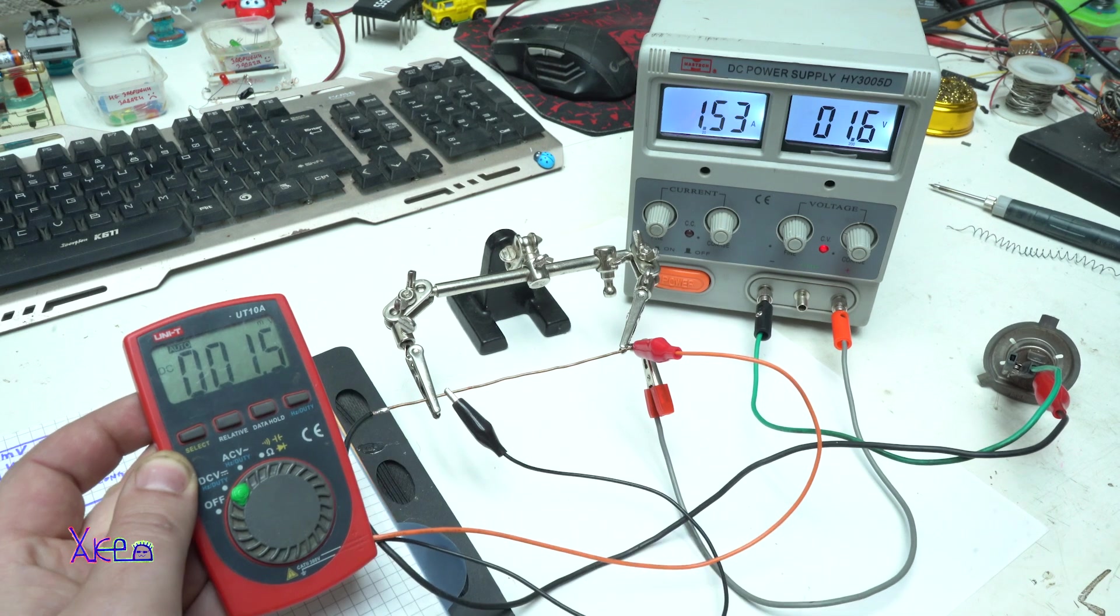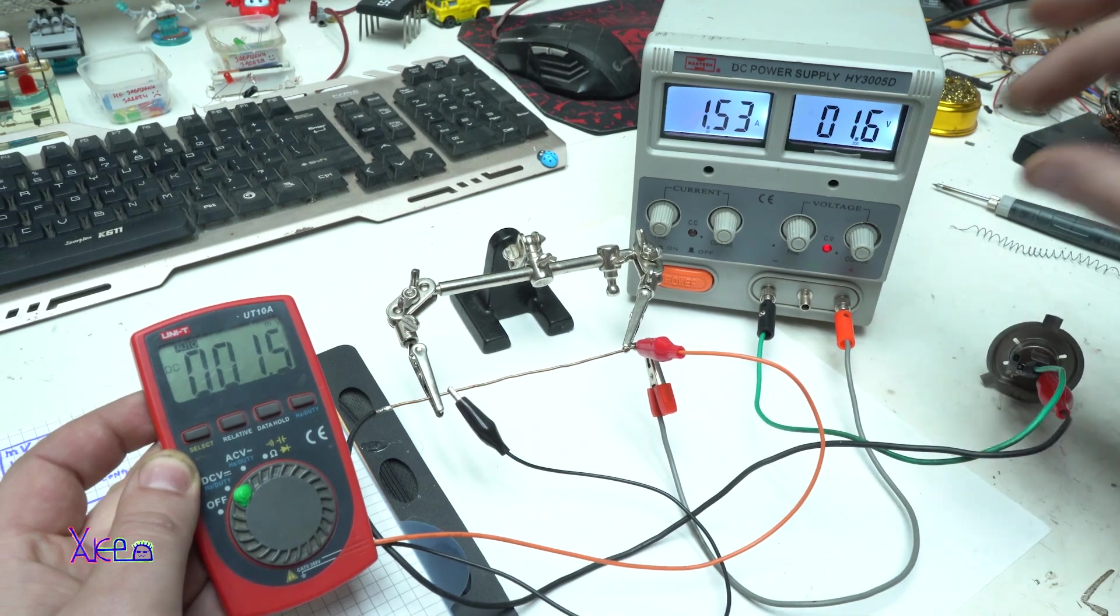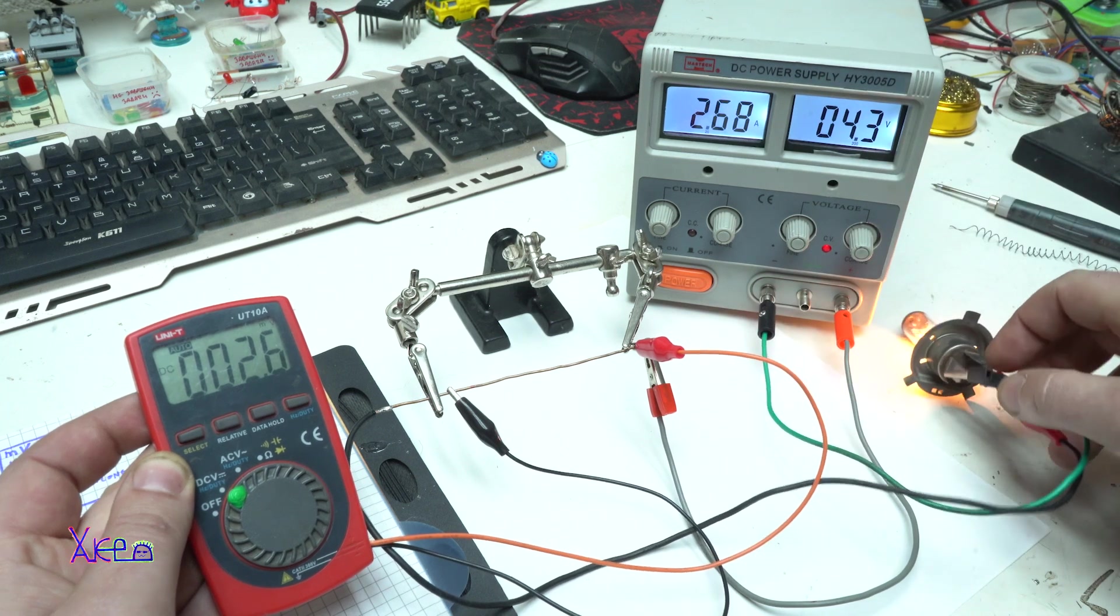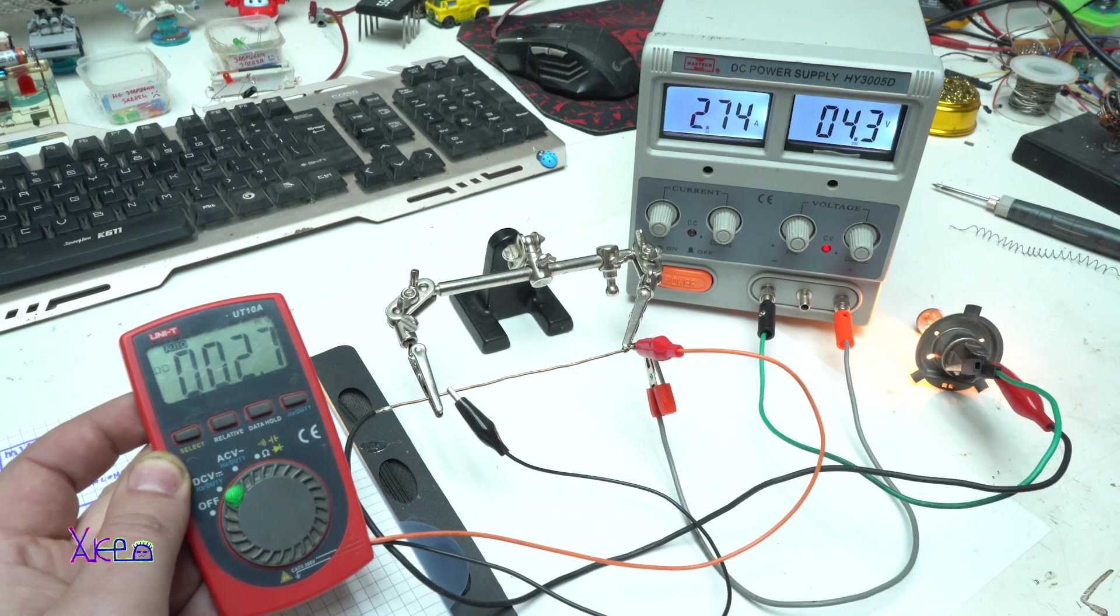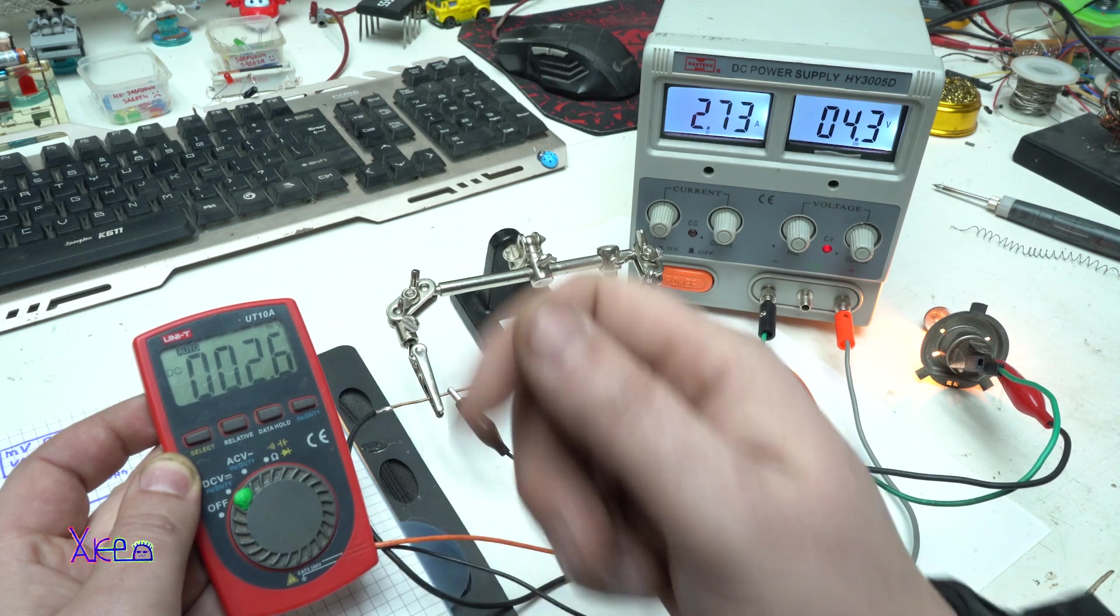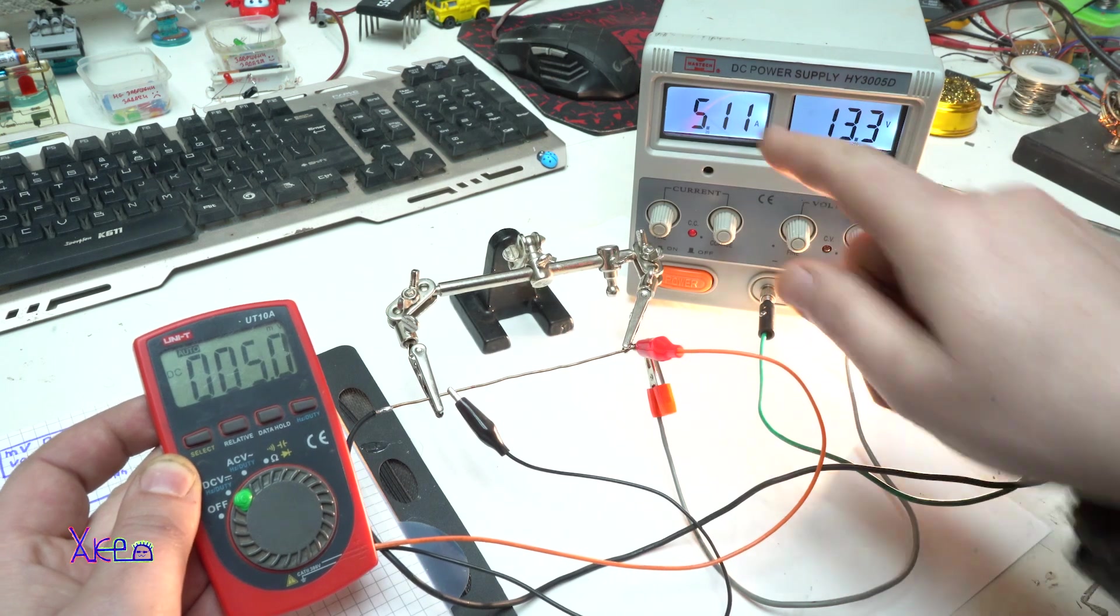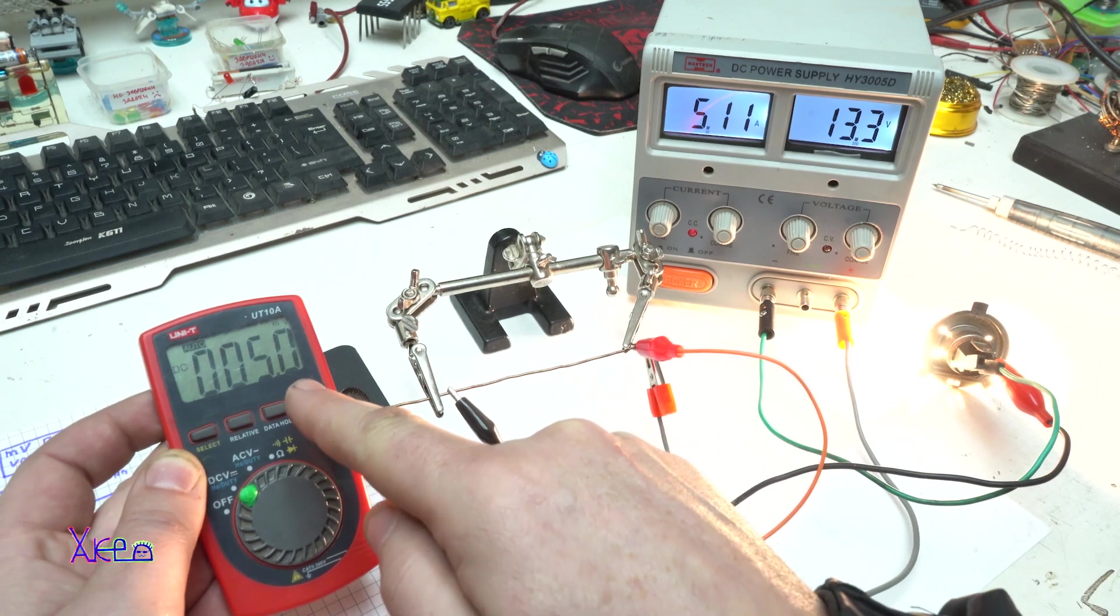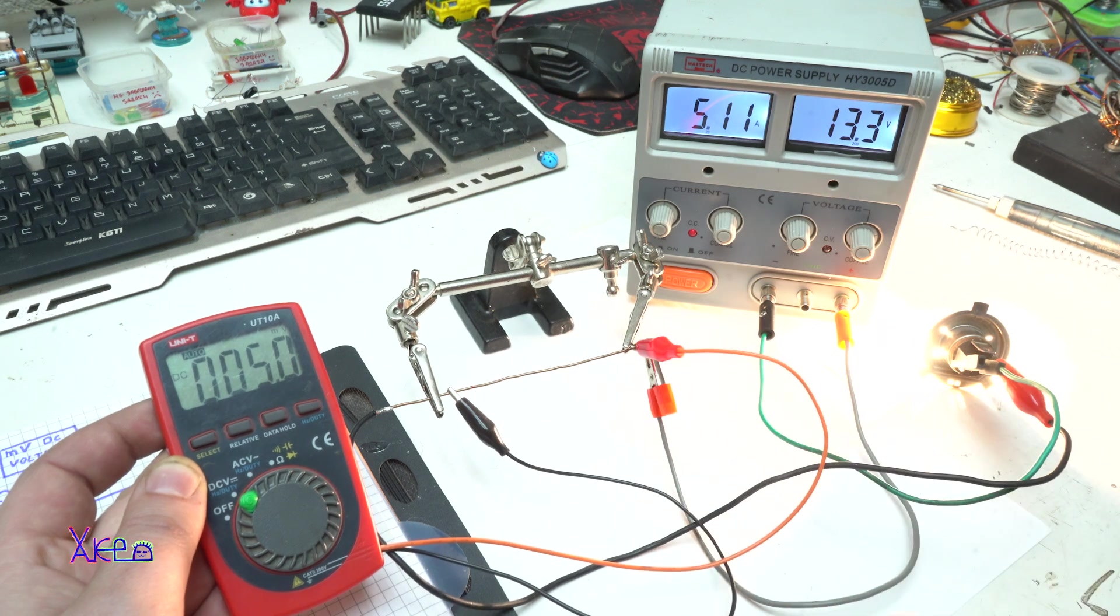Now I'm gonna increase the voltage, let's say 4.3 volts, and it's pulling 2.7 amps. On the digital multimeter, 2.7 millivolts meaning amperes. And I'm going to maximum 5.1 amperes, and look, 5 amperes on the digital multimeter. You can use this